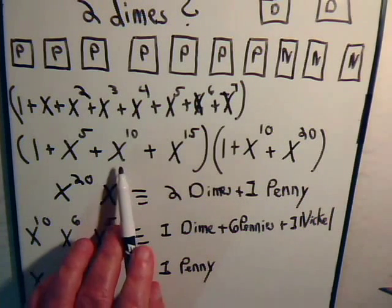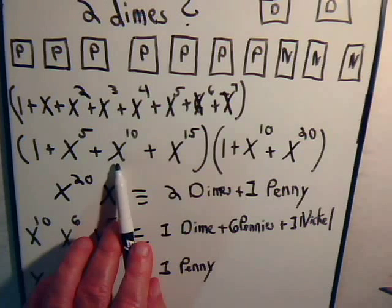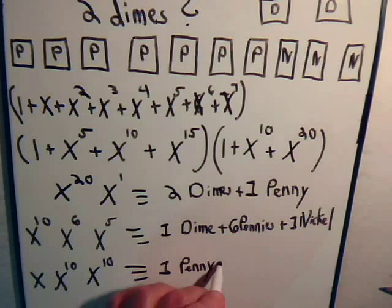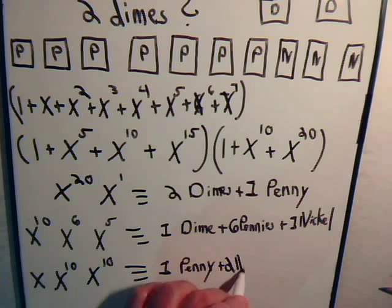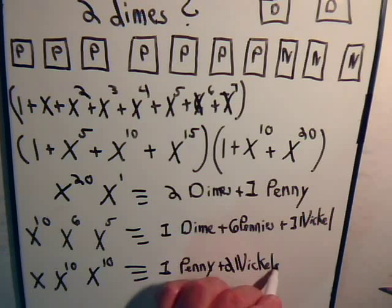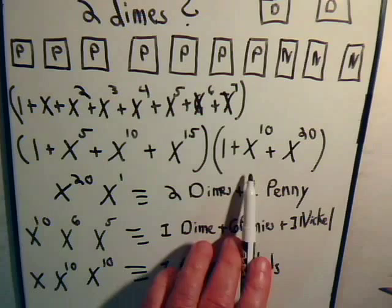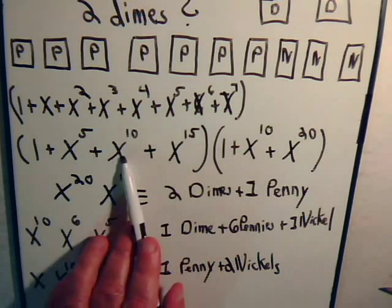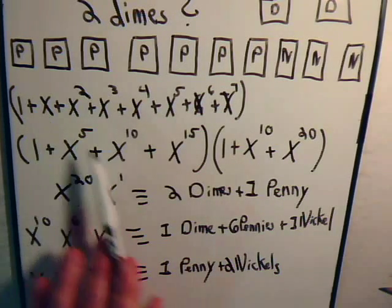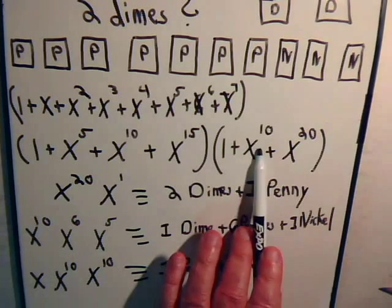So here that's one penny. Now this x to the 10, that represents two nickels. So that would be one penny plus two nickels. And this x to the 10, we multiply this times this times this, one penny plus two nickels plus one dime.